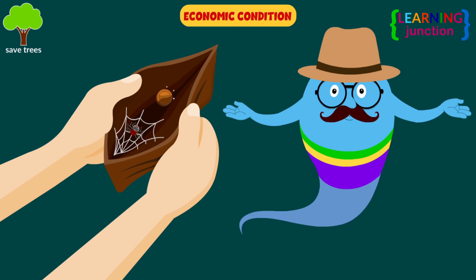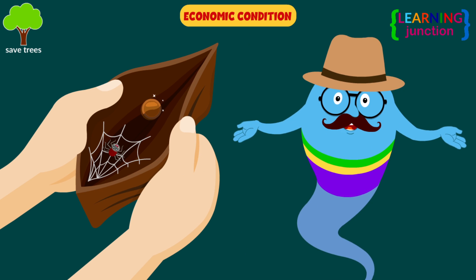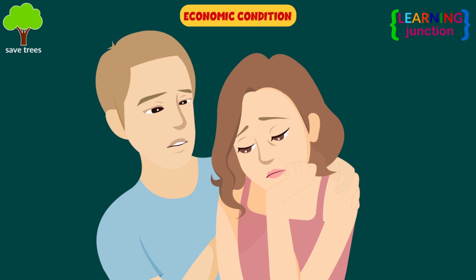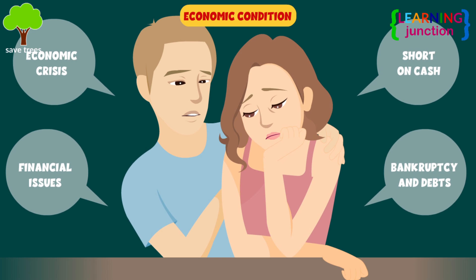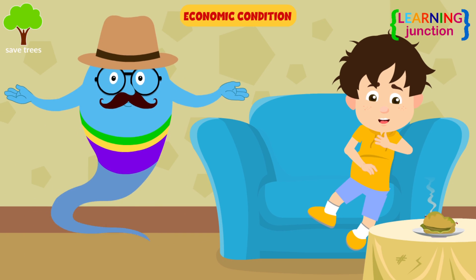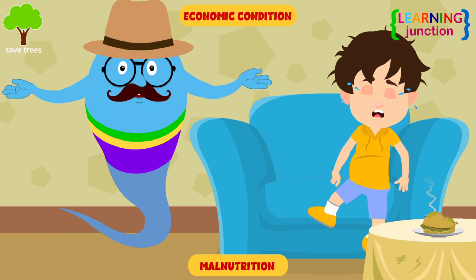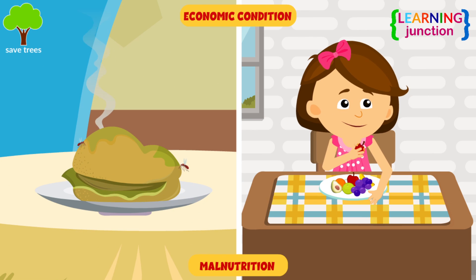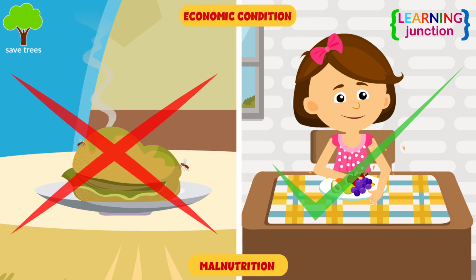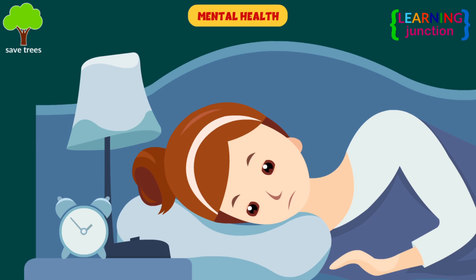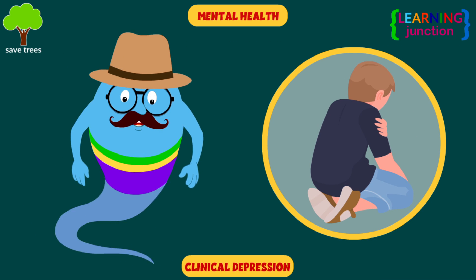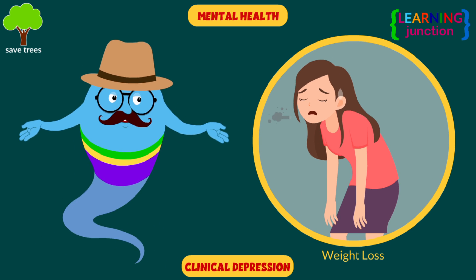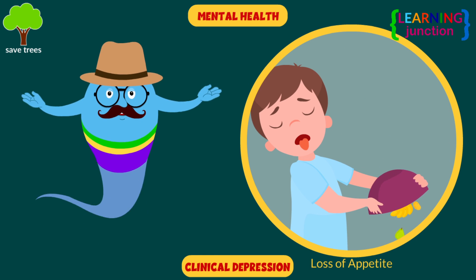Economic condition is also a factor. If a person is not financially stable, he is not able to take care of himself, which results in several diseases. For example, malnutrition is a serious condition that happens when your diet does not contain the right amount of nutrients. Mental health always has an impact on physical health — for example, clinical depression may cause either weight loss or loss of appetite.